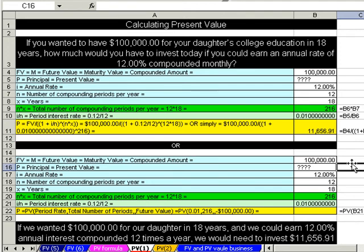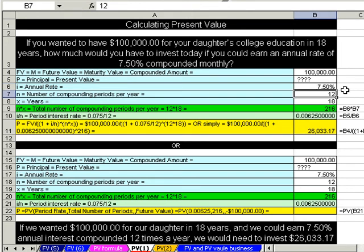$11,656.91. That's pretty awesome. Just out of curiosity, what if you couldn't get 12%? What if you could only get 7.5? That's why we do it in Excel. We simply change that. Everything updated. In this case, if we could only get 7.5 monthly, we'd put $26,033 in today. But in 18 years, we'd have accrued a bunch of interest and have 100K.